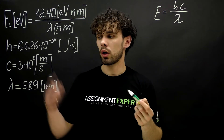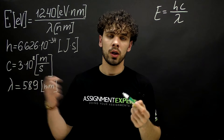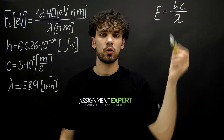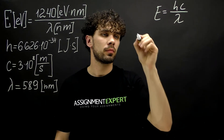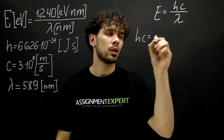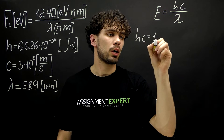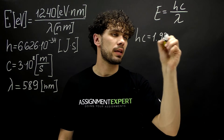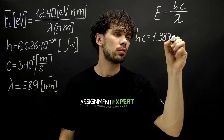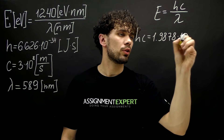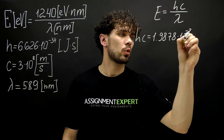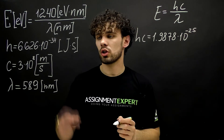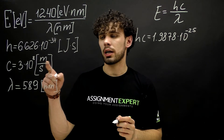The last two are well known, so we can find the expression in the numerator. hc equals 1.9878 times 10 raised to the negative 25th, and the units are joules times meters.